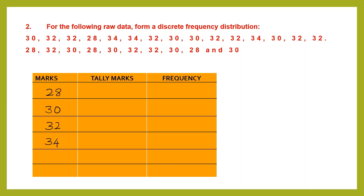Now let's count how many 28s there are. As you find each one, strike it off and draw a tally mark — a slightly slanting or vertical line. We have one 28 in the first row. In the second row we have one more, then one more, then one more. So we have four 28s. Frequency is the number of times a mark has been repeated. So the frequency of 28 is 4.